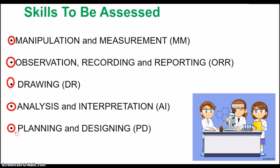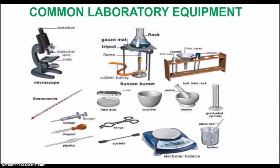Let's look at common lab equipment you should know. You should know how to use a microscope, Bunsen burner, tripod and gauze, test tubes and boiling tubes, thermometer, syringe, dropper pipette, petri dish, crucible, mortar and pestle for crushing seeds or food, a graduated cylinder (measuring cylinder), beaker, and an electronic balance for weighing samples such as soil.